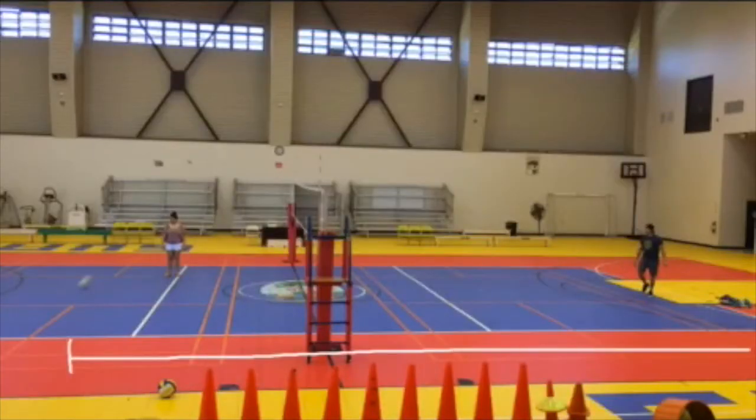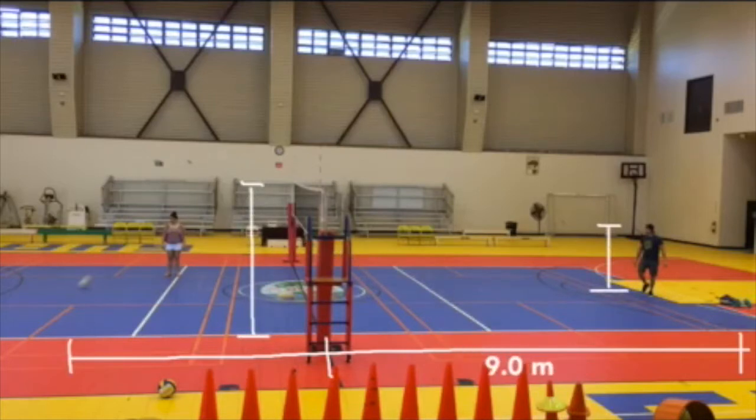These are the heights and distances we measured. From the player to the net is 9 meters. From the net to landing is 4.6 meters.